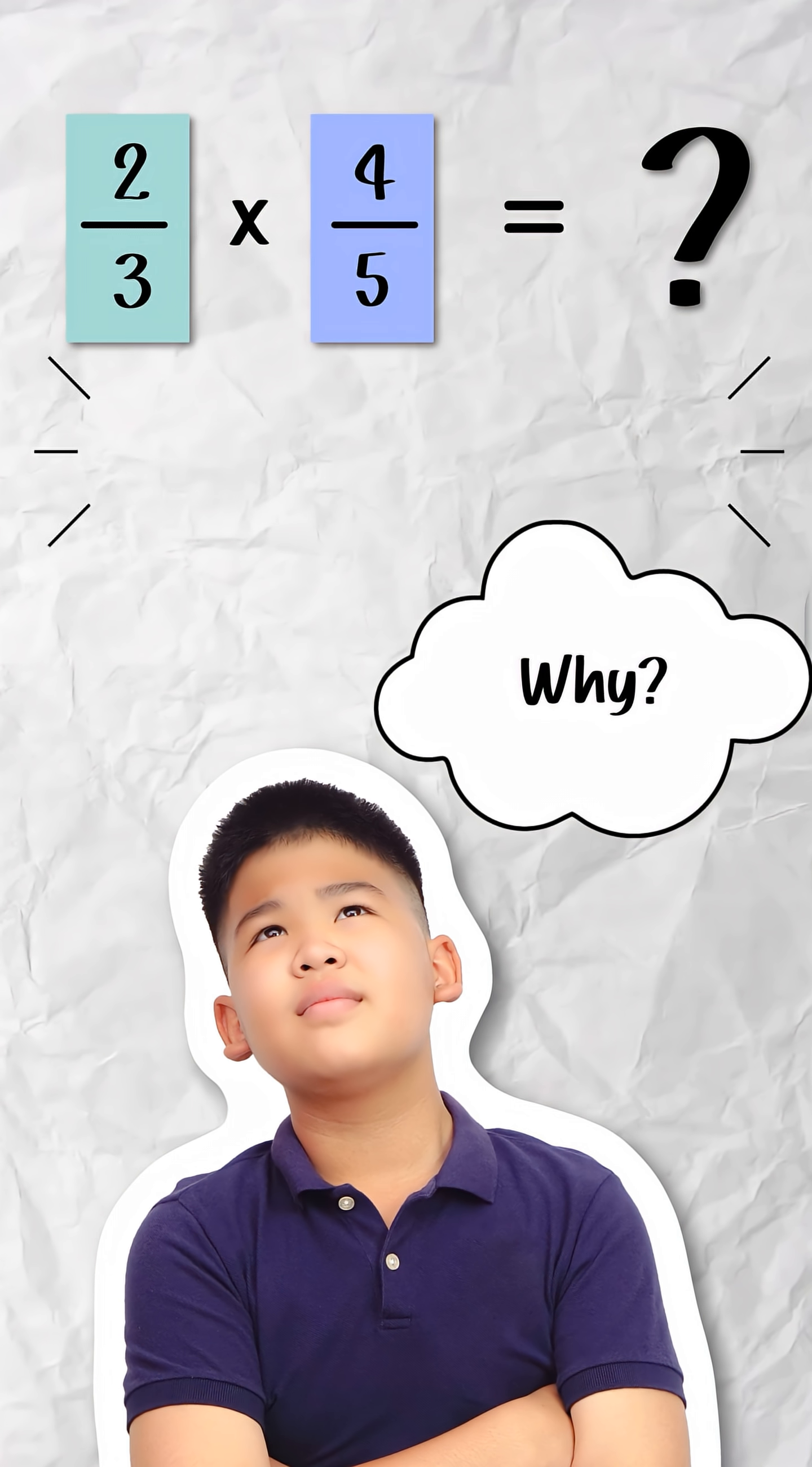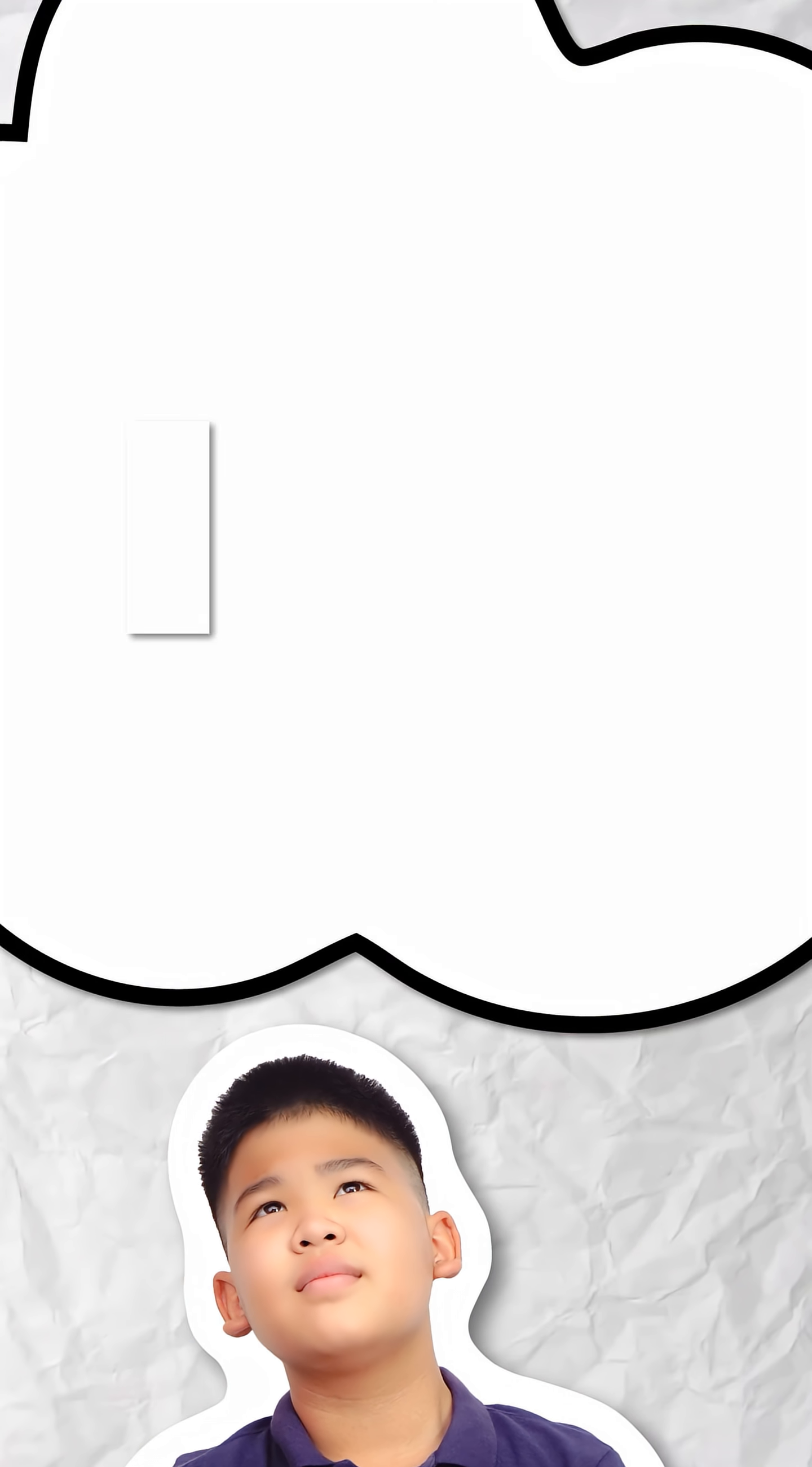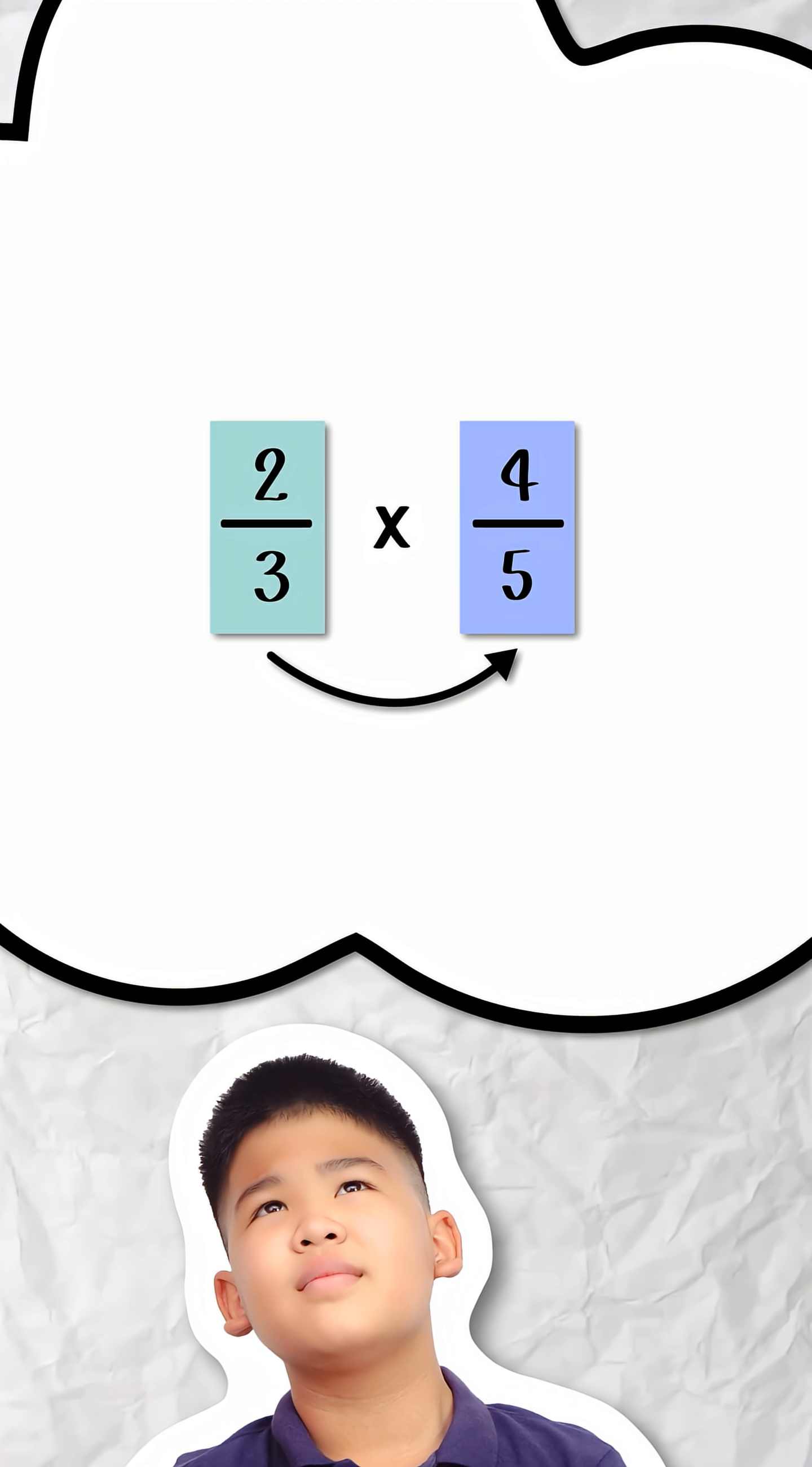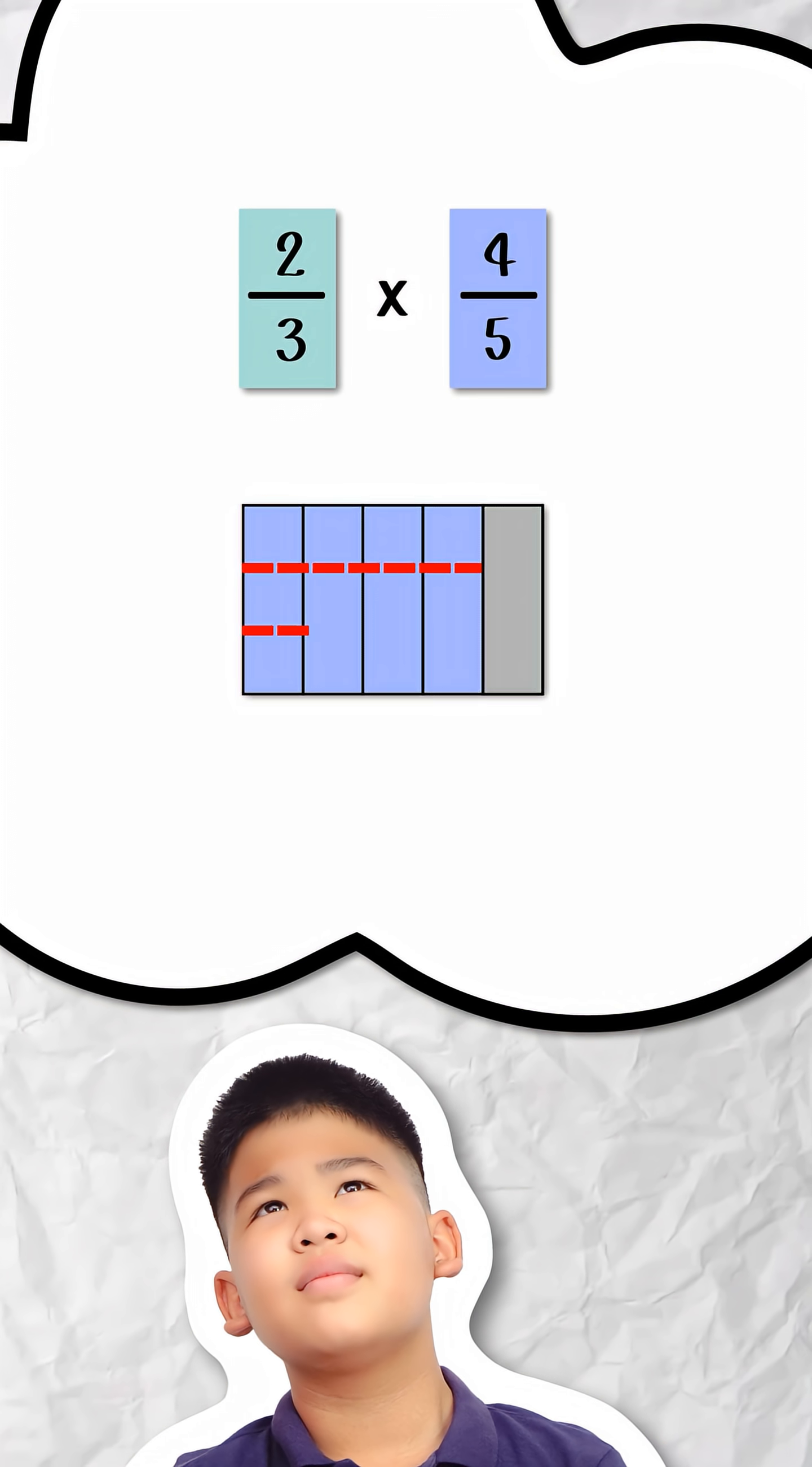So if they forget the rule, they can't reason their way to find the answer. But when they understand how the rule emerges from how fractions are written and the meaning of multiplication, they can reconstruct it logically, even if they don't remember all the steps.